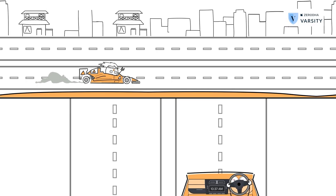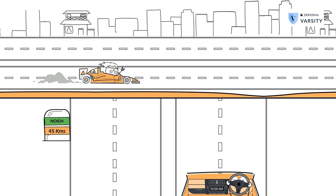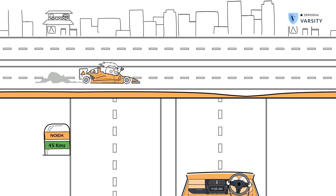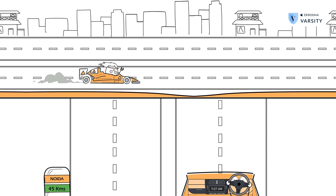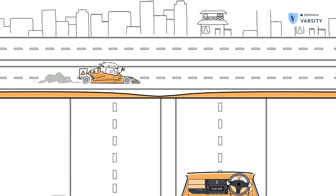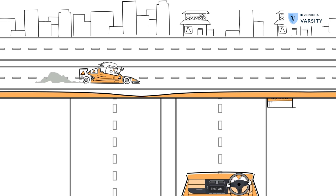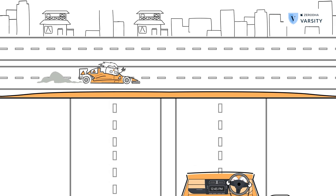Imagine that there is a person travelling from Delhi to Noida, roughly a distance of 45 kilometres. Do you think he'll be able to cover this distance in one hour, assuming that there is no traffic on the road? Well, it will be difficult for you to answer that question without knowing the speed at which the person is travelling.